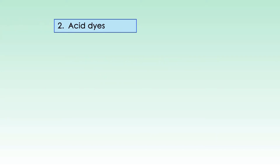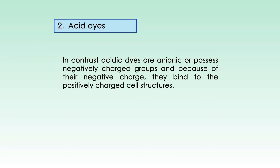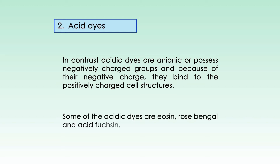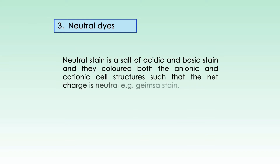Acidic dyes are anionic or possess negatively charged groups, and because of their negative charge, they bind to positively charged cell structures. Some acidic dyes are eosin, rose bengal, and acid fuchsin. Neutral stain is the salt of acidic and basic stain, and they color both the anionic and cationic cell structures such that the net charge is neutral. One example is Giemsa stain.